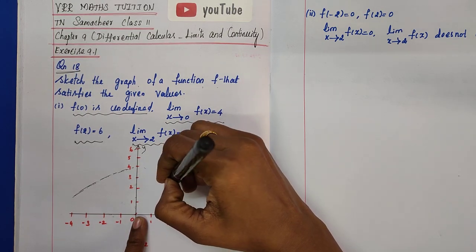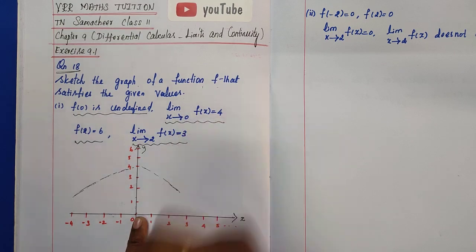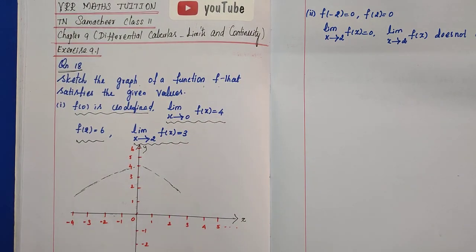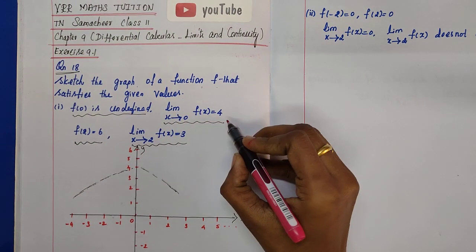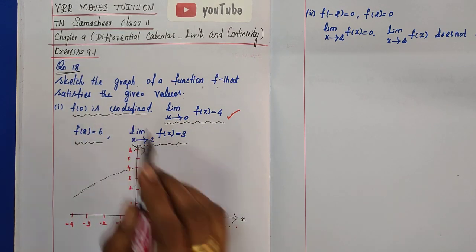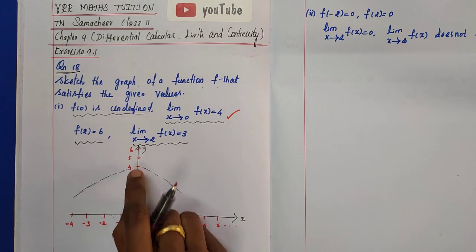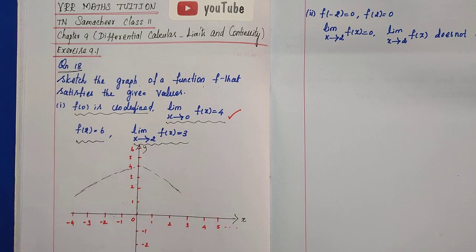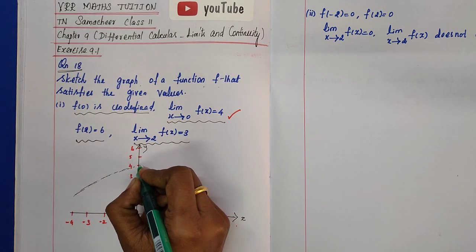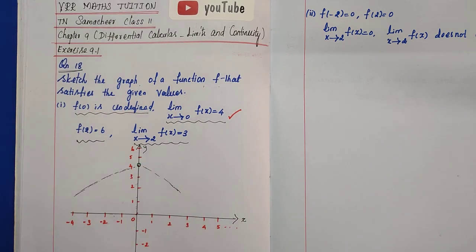So the graph approaches the value 4. Condition 2: f(0) is undefined. So f(0) in the graph is undefined. An undefined point is represented as an open circle shape on the graph at the point (0, 4).